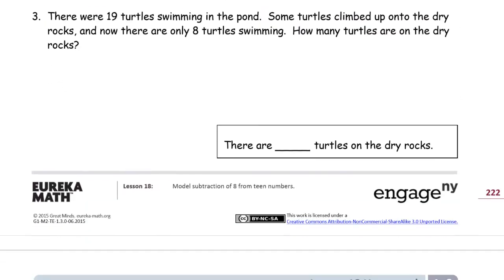There were 19 turtles swimming in the pond. Some turtles climbed up onto the dry rocks, and now there are only 8 turtles swimming. How many turtles are on the dry rocks? So we have 19 turtles. 1, 2, 3, 4, 5, 6, 7, 8, 9, 10. And 1, 2, 3, 4, 5, 6, 7, 8, 9. Because 19 is 10 and 9. So here's our 10, and here's our 9.